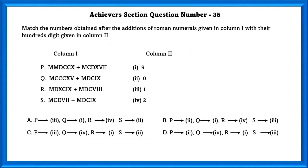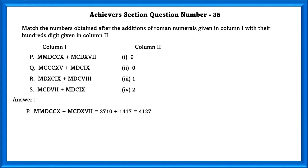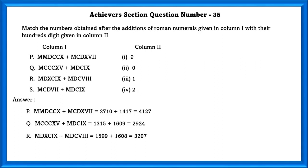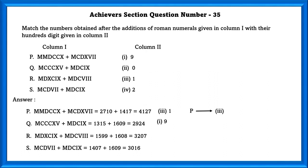Achieve section question number 35. Match the numbers obtained after addition of Roman numerals in column 1 with the hundreds digit given in column 2. P = 2710 + 1417 = 4127. Q = 1315 + 1609 = 2924. R = 1599 + 1608 = 3207. S = 1407 + 1609 = 3016. P has hundreds digit 1, Q has hundreds digit 9, R has hundreds digit 2, S has hundreds digit 0. Matching these: P = 3 (i.e., option I), Q = 1, R = IV, S = I. So the answer is A.